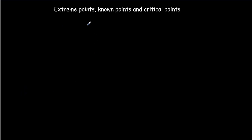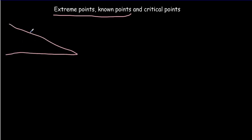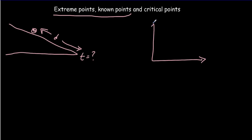Let's start off with a simple example of how extreme and known points can be used as reasoning to predict a graph for that experiment — changing the distance a marble goes down a ramp and measuring the time. We want to predict what the graph of distance versus time is going to look like. When I say extreme points, I mean imagine your independent variable has a very small value. Of course, if distance equals zero, then time is going to be zero, which gives us a known point — the curve has to pass through the origin.